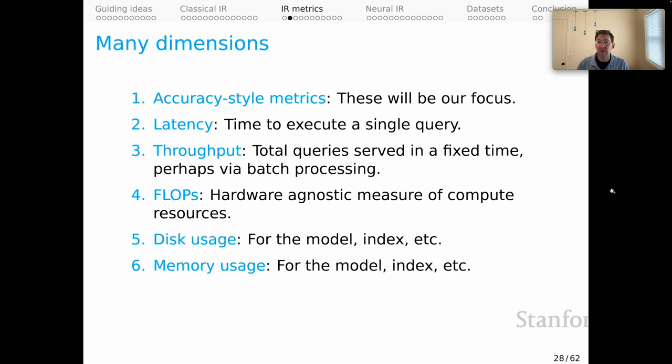For modern systems, maybe more pressing would be memory usage, again for the model or the index. If we need to hold the entire index in memory to have a low latency system, that could get very expensive, very fast, for example. And we could think about cost as a kind of way to summarize all of two through six in a way that gets us thinking holistically about the system and about trade-offs that are inherent in these metrics.